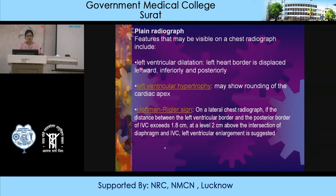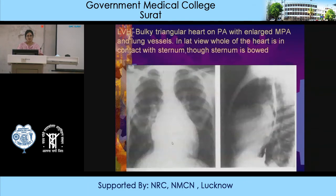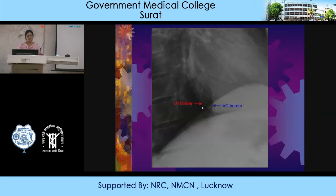You can see a bulky triangular heart on PA with an enlarged main pulmonary artery. On the lateral view, all of the heart is in contact with the sternum. The left ventricular border is situated here; the IVC border is here — there is an increased distance between them, indicating left ventricular hypertrophy.